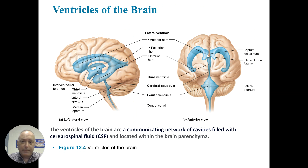There are ventricles in the brain, which are communicating networks of cavities filled with cerebrospinal fluid located within the brain parenchyma. There are four ventricles: the lateral ventricle, the third ventricle, the cerebral aqueduct, and the fourth ventricle.